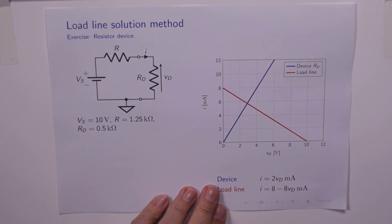Our job is to find the current and the voltage across the device. Now obviously this problem is trivial, we can just use Kirchhoff's voltage law again to do the calculation. But let's just solve this one using the load line method.